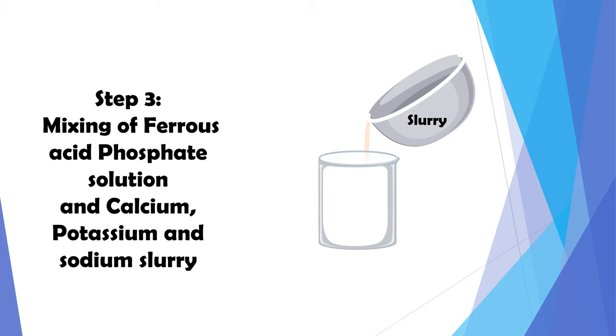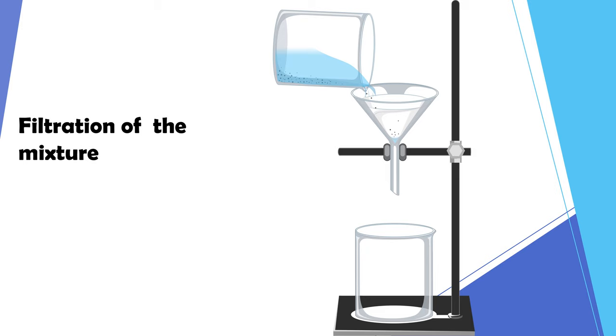Third step is the mixing of ferrous acid phosphate solution and calcium, potassium and sodium slurry. In this mixture, iron carbide and carbon derivatives are formed. These derivatives are filtered off through a filtration assembly.